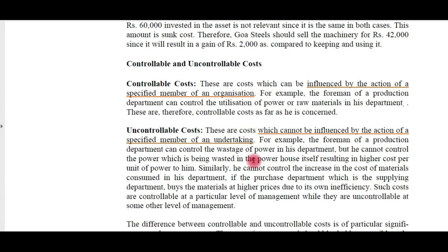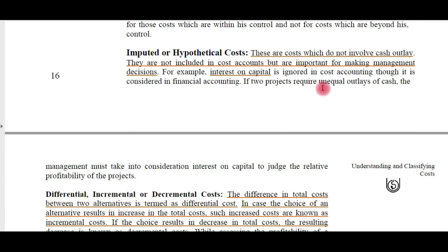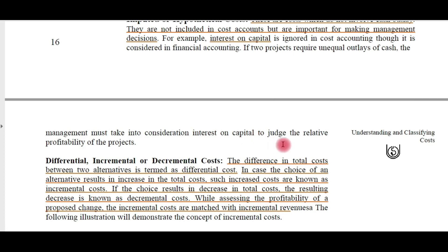Imputed or hypothetical costs are costs which do not involve any cash outlay. They are not included in cost accounts but are important for making management decisions. For example, interest on capital — normally, interest on borrowed capital is not included in costs; it is treated as an expense in the profit and loss account. If two projects require unequal outlays of cash, the management must take into consideration the interest on capital to judge the relative profitability of the projects.